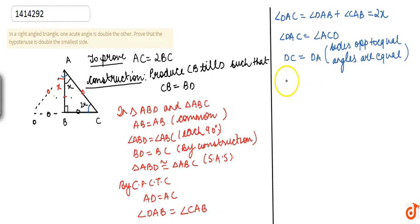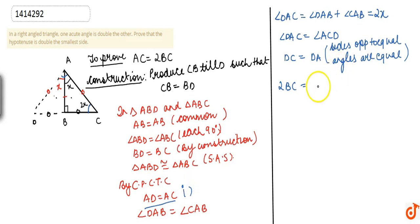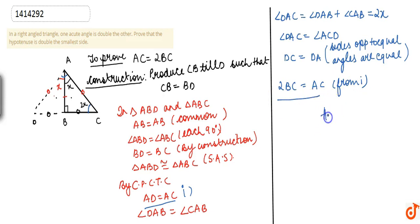Now, AC is equal to twice BC, because we need our result in BC. We can write the result as AC is equal to twice BC. Hence proved.